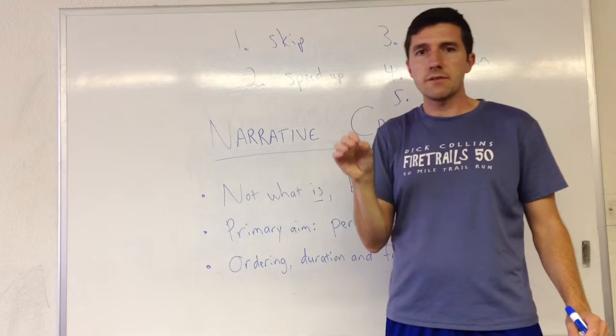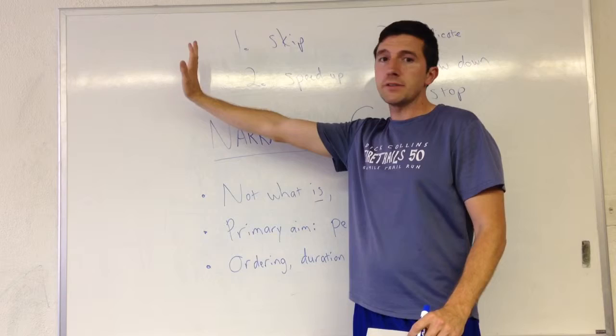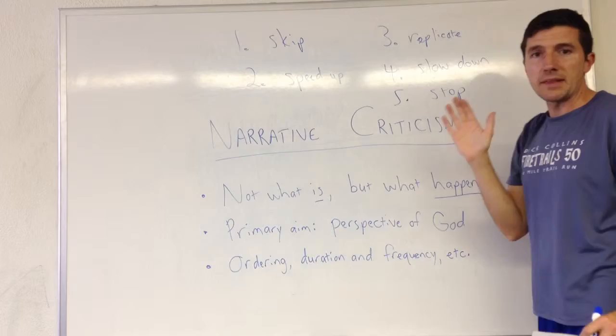And again remember, these words indicate the relation of the narrative time to the actual chronology. On one end, we have narrative altogether skipping chronological events. On the other end, it's stopping them so that it's dwelling on them to infinity.